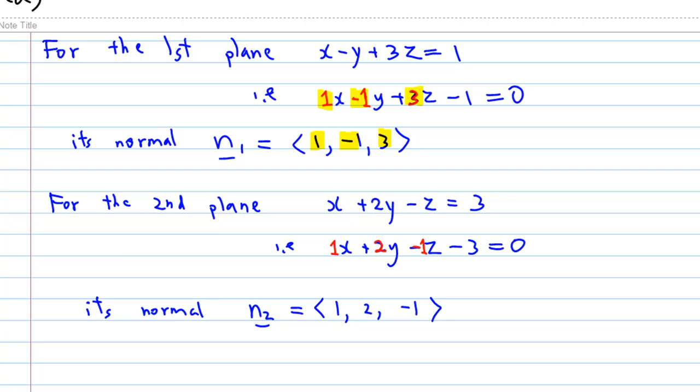On the other hand, given the second plane x plus 2y minus z equals 3, we can rewrite it as 1x plus 2y plus minus 1z minus 3 equals 0. So the normal n2 to the second plane is 1, 2, minus 1.